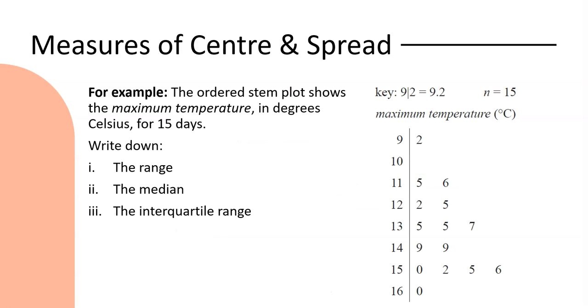We'll now have a look at a couple of quick examples about how to find some of these key statistics. So in this first example we've got an ordered stem plot showing the maximum temperature in degrees Celsius for 15 days. And the important thing with our stem plot to remember is that we have always given to us a key, and so we can see that number 9/2 actually represents the temperature 9.2 degrees. The other piece of information we've been given but we could also count is the total number of data values. So there are 15 data values in this set.